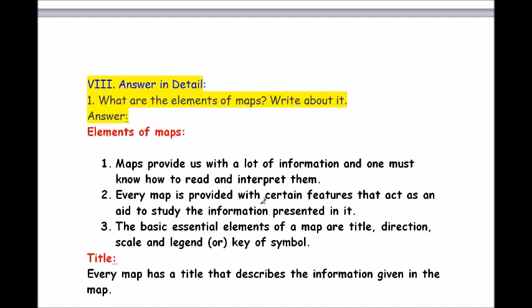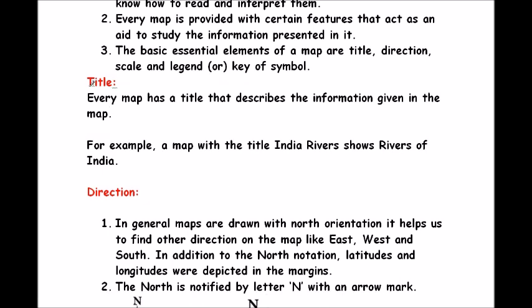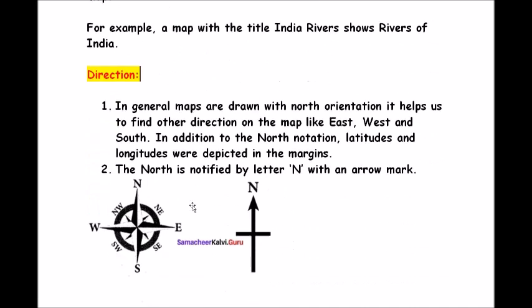Title: every map has a title that describes the information given in it. For example, a map with title 'India River' shows rivers of India. Direction: in general, maps are drawn in north orientation, helping us find other directions like east, west and south. The north is notified by the letter N with an arrow mark. Latitudes and longitudes are also depicted in the margins.